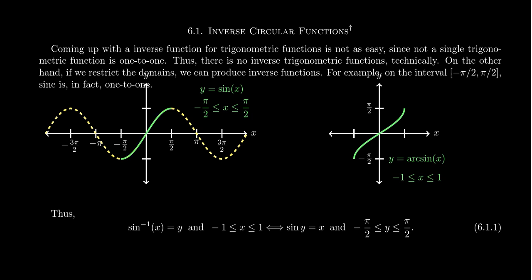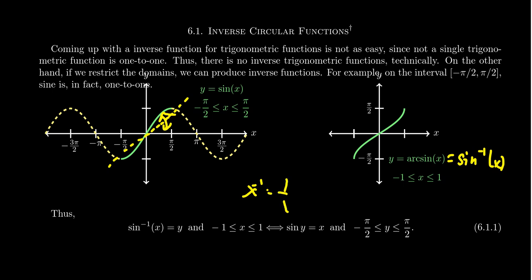On this principal branch of y equals sine x, we then construct the inverse function. If we reflect this across the diagonal — the line y equals x — we get something that looks like this. This function we refer to as y equals arcsine of x, or sometimes it's denoted sine inverse of x, with a negative one superscript next to the sine.